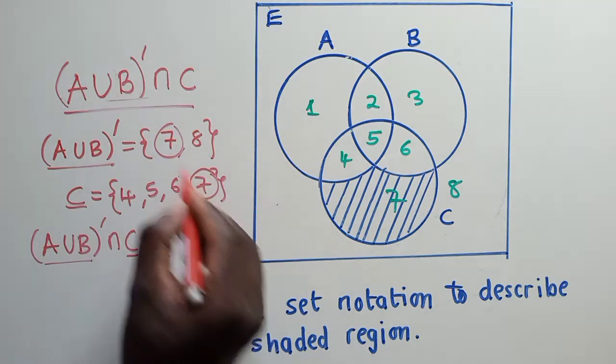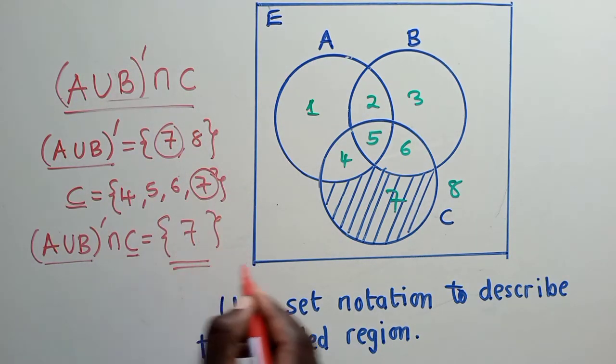What is the intersection? Of course, it will be 7, because 7 is found here and here. It will be 7.